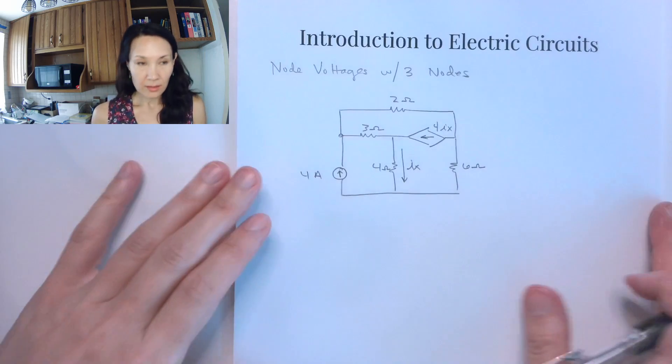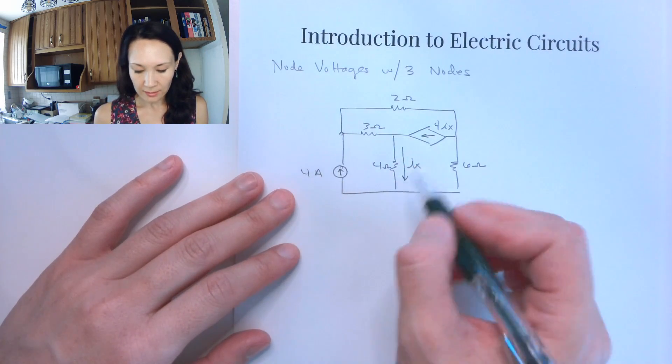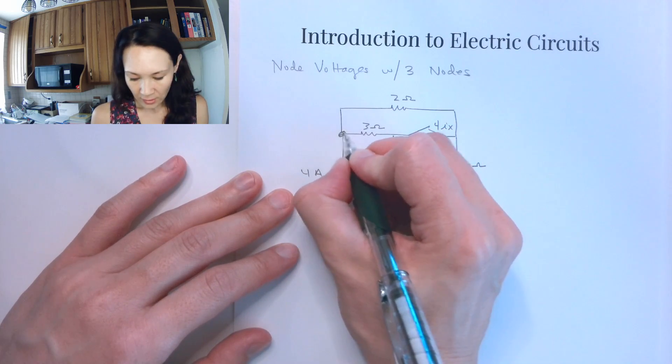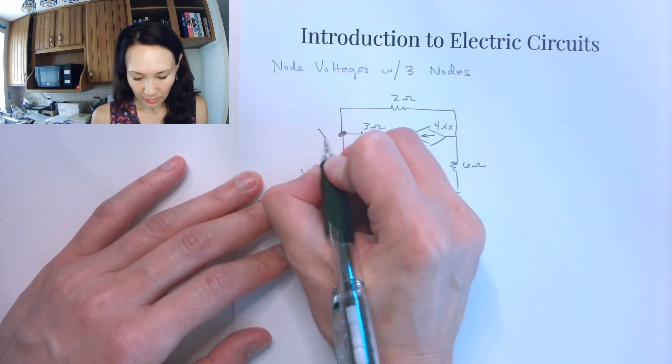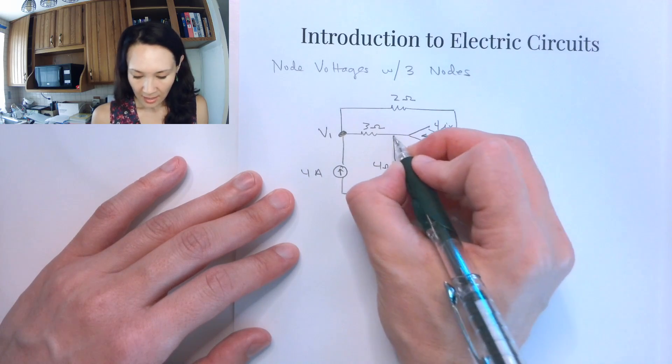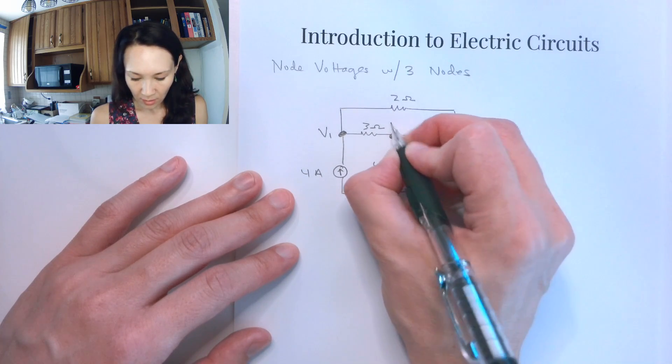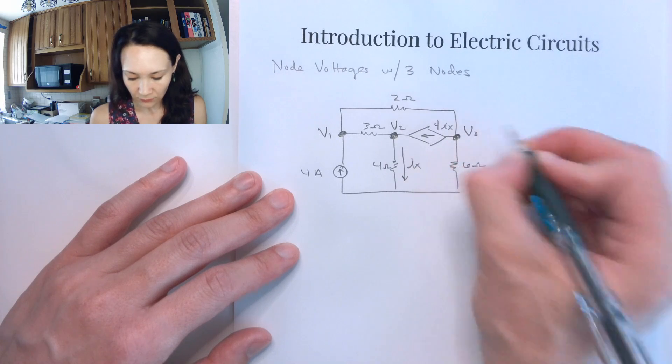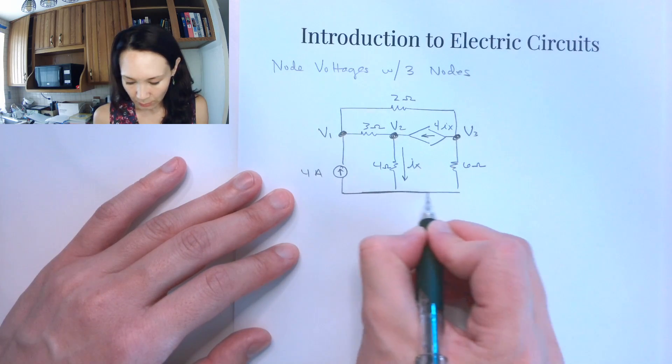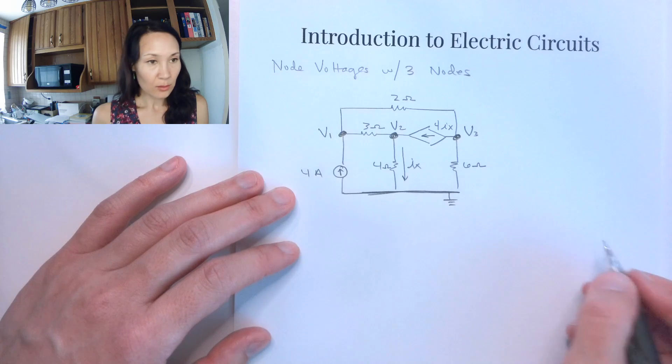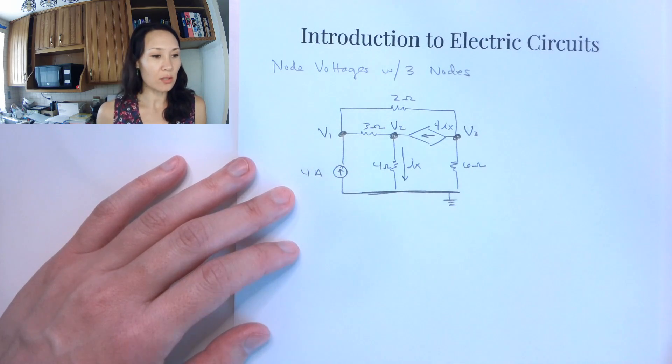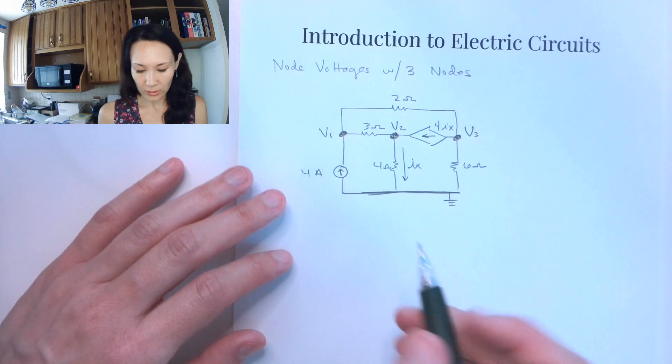And the steps for node voltages, if you remember, is the first thing we want to do is we want to label all of the nodes. So I've got a node here. This is where the current splits. I'll label this V1. I have another node in between here. I'll label this V2. And then my third node is over here. This is V3. I'm going to let this bottom wire be my reference node. So I'll put a little ground sign there so we know that that's the reference node.